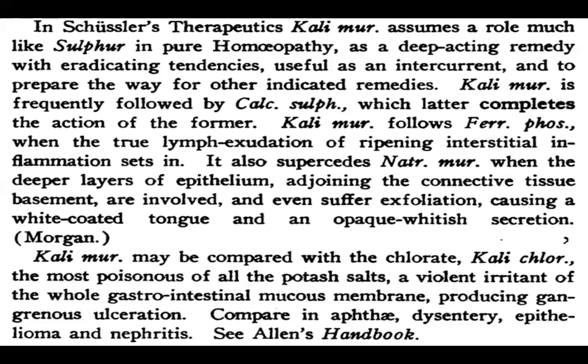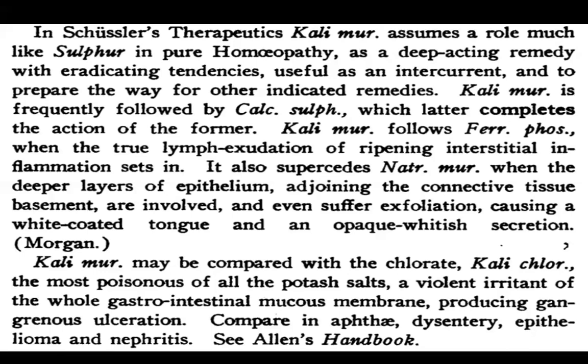Kali Muriaticum may be compared with Kali Chloricum, the most poisonous of all the potash salts — a violent irritant of the whole gastrointestinal mucous membrane producing gangrenous ulceration. Kali Chlor is a syphilitic remedy with ulcerations from mouth to anus. Compare dysentery, epithelioma, and nephritis with Kali Chlor. It is more syphilitic, more violent, with a specific action from mouth to anus with tremendous ulceration and sometimes cancerous changes.